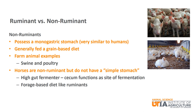Farm animal examples of non-ruminants include swine and poultry. While horses are also non-ruminants, they would not be called simple stomached. They are actually hind gut fermenters, which means that the cecum functions as the site of fermentation much like the rumen in cattle. Horses primarily have a forage-based diet much like ruminants.